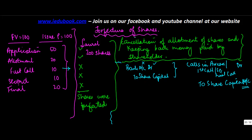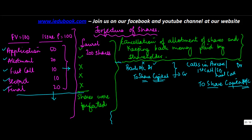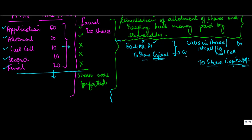In the process when you forfeit these shares, your share capital account gets debited to reverse the credits that were made up to the stage when the forfeiture happens. In this case, the forfeiture happened after the final call, so share capital would have been credited for application, allotment, first call, second call, and final call. This credit is now going to be reversed, so you debit the share capital account.